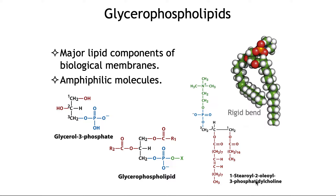If you take a look at the hydrophobic region of a glycerophospholipid, it's composed of two different fatty acids. Those two fatty acids are joined to the glycerol via carbons one and two — joined to a phosphoglycerol really via carbons one and two. You also have a highly charged polar head group, which is the phosphate, attached to carbon three via a phosphodiester linkage.